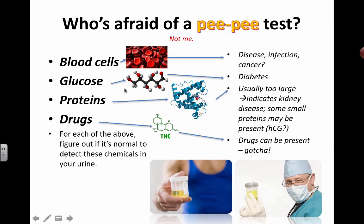Glucose should not be in your urine either. If you do have glucose getting through into your urine, it's probably a sign of diabetes. Back in the day, doctors used to taste people's urine, and if it was sweet, that was a sign that you probably had diabetes.